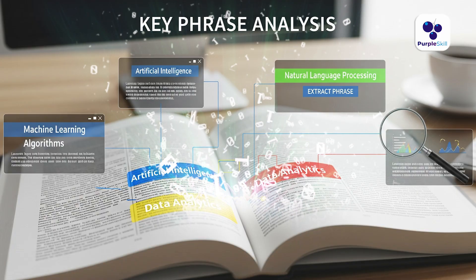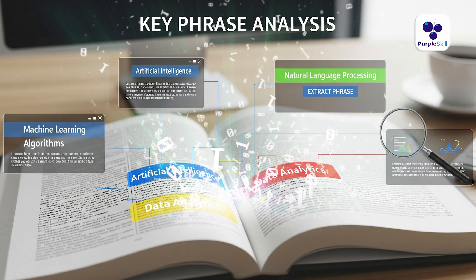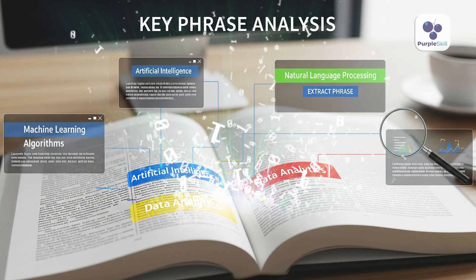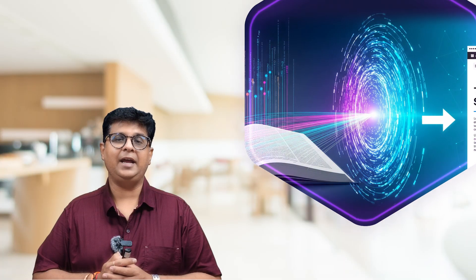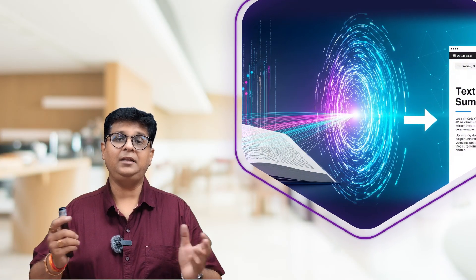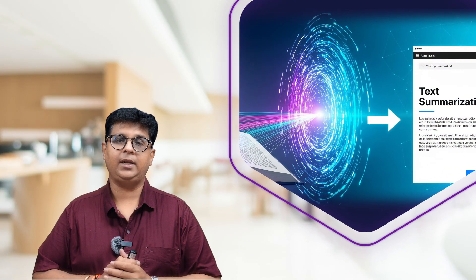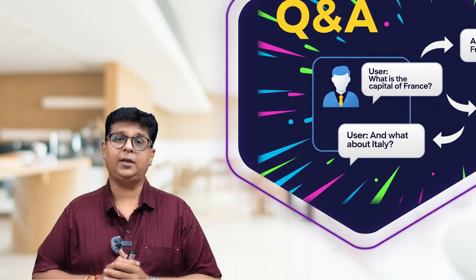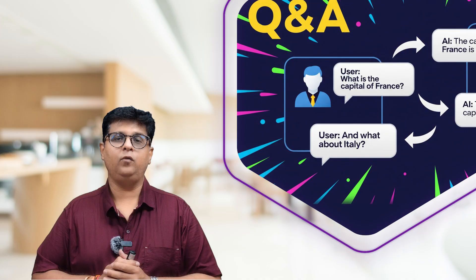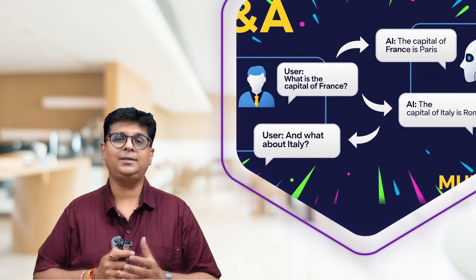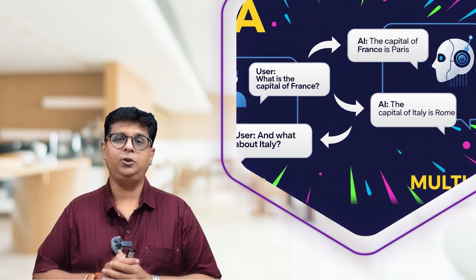In Key-Phrase Extraction, we extract important keywords and important content from a document or text. With Summarization, we can condense lengthy text into a small summary. And with Q&A, we can have multi-turn question and answer interactions with the user.